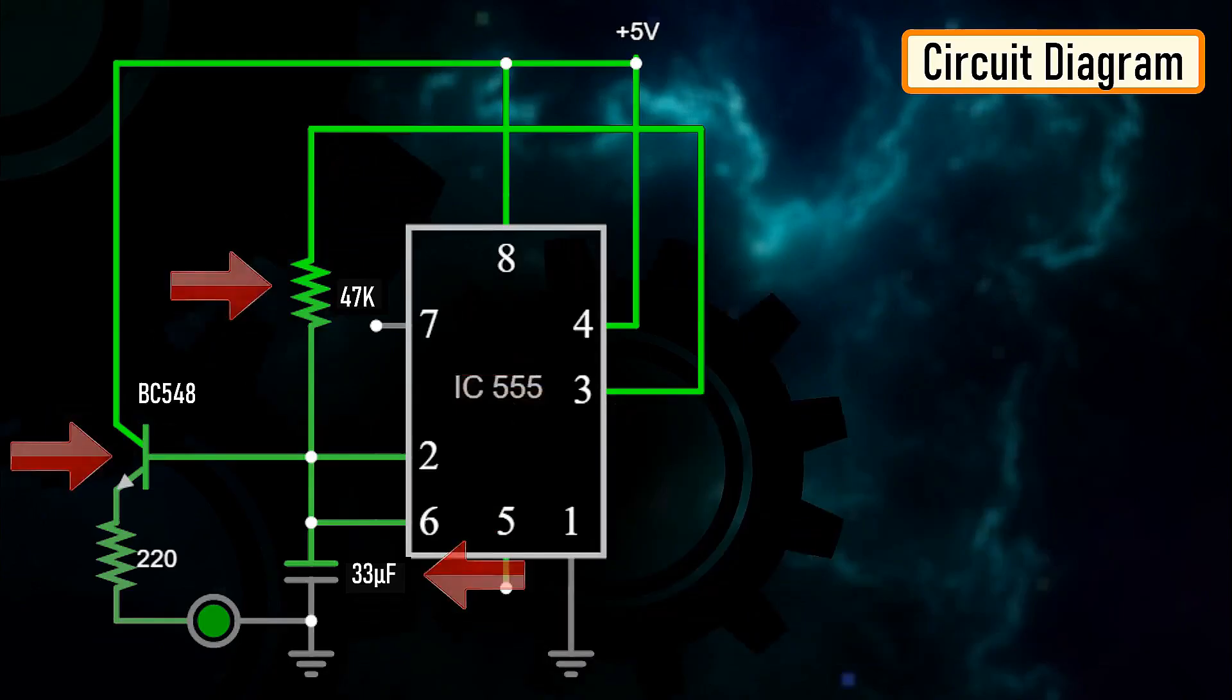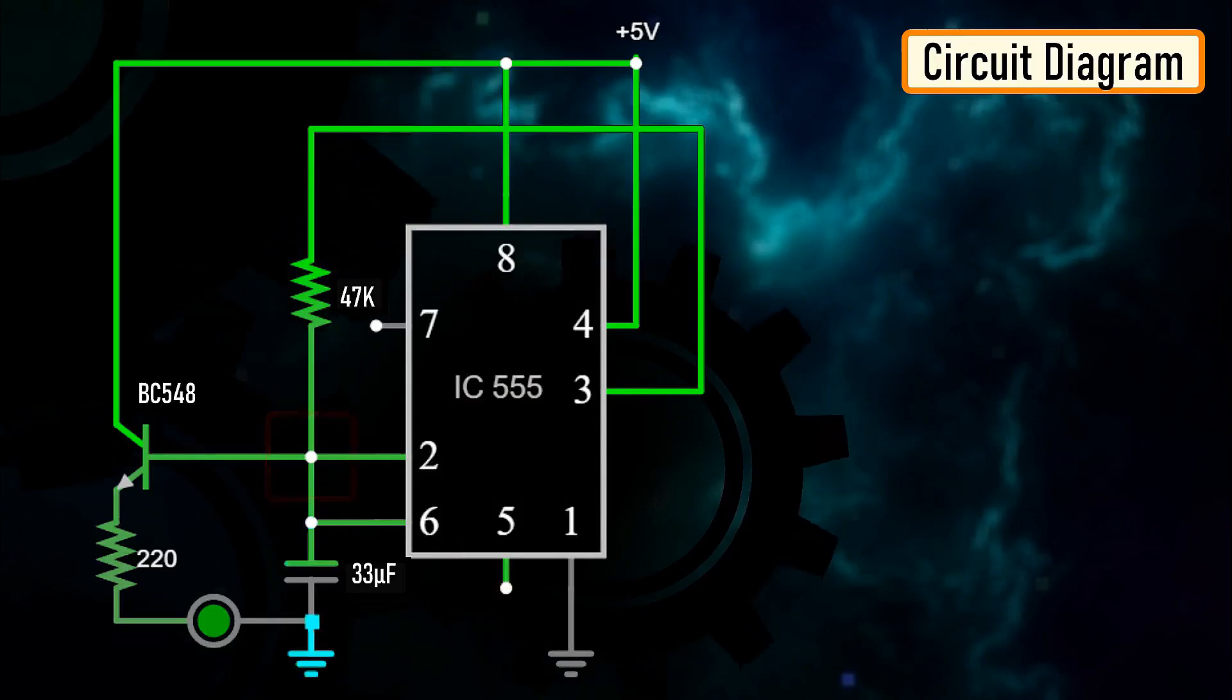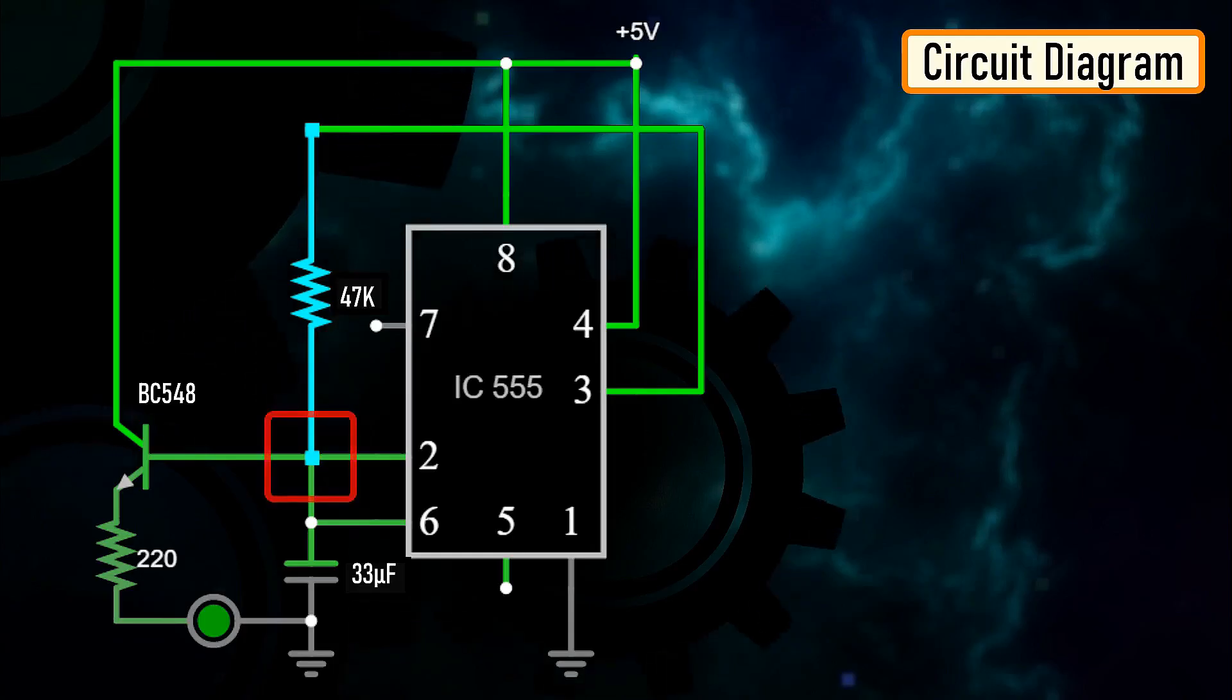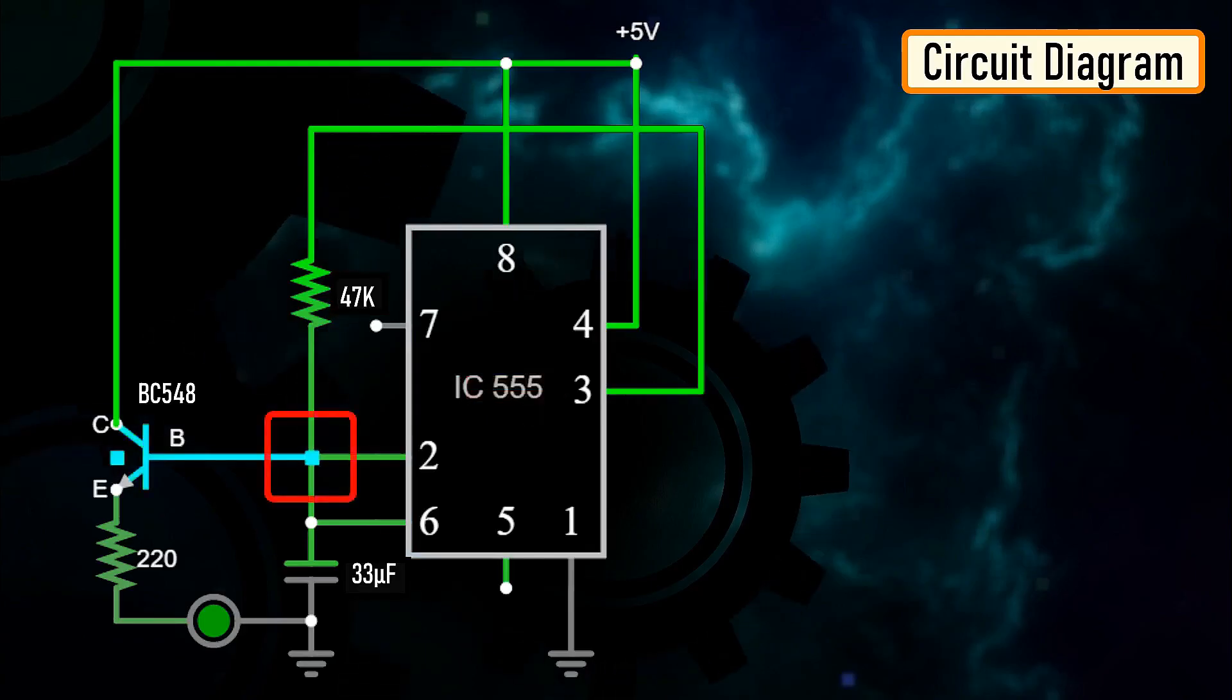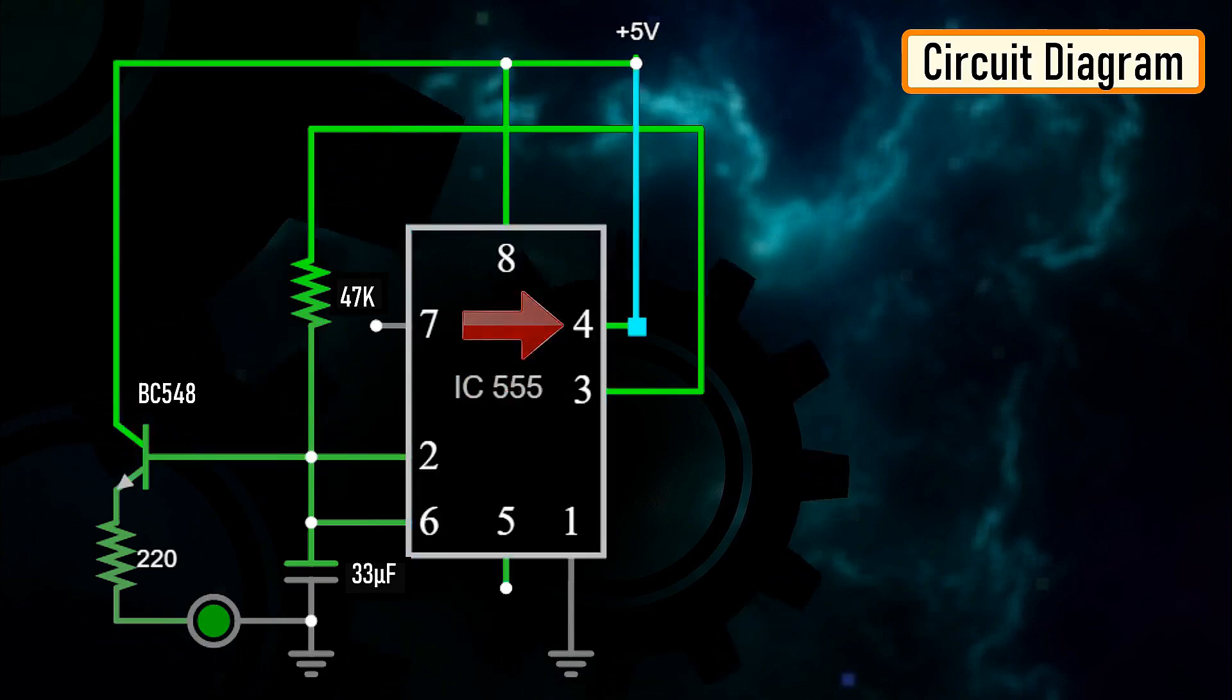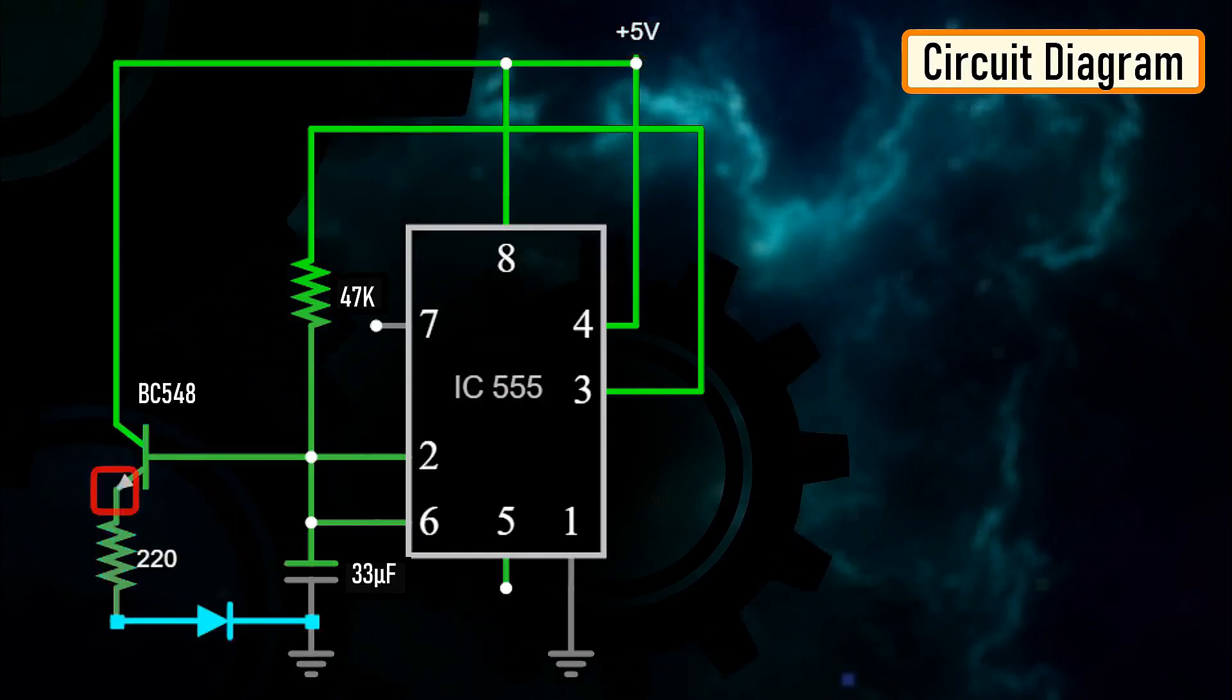Three other components connect to this junction. First one is the 33 microfarad capacitor. The positive pin of the capacitor connects to this junction and the negative pin is grounded. Second one is the 47 kilo-ohm resistor. One of its legs connects to this junction and the other leg is connected to the output pin, pin number 3 of the IC. Third one is the base of the BC548 NPN transistor. The collector of the transistor along with pin number 8 and 4 of the IC connects to the positive terminal of the battery.